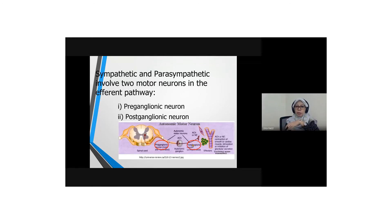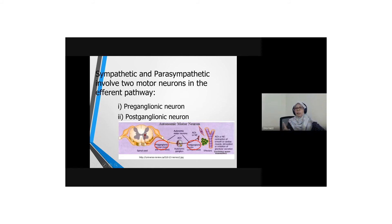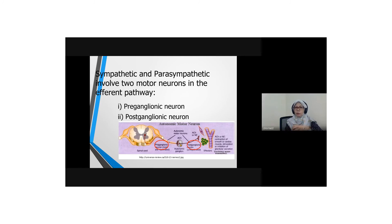In terms of the neurotransmitter, the first synapse is similar — it is acetylcholine. But the second synapse, the neurotransmitter released is also acetylcholine. So in short, for parasympathetic, both the first and second neurotransmitters released are acetylcholine.